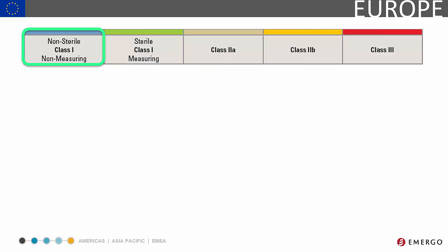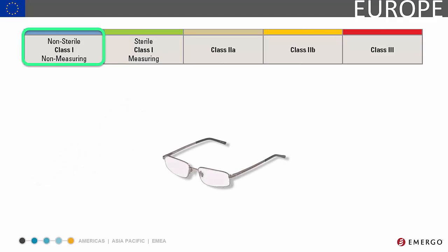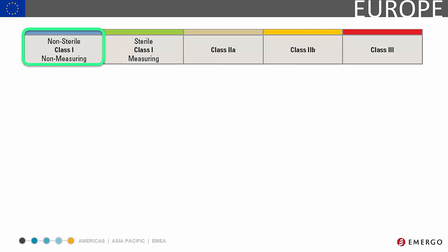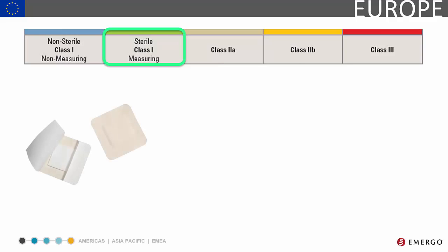Examples of Class 1 non-sterile, non-measuring devices include a scalpel, eyeglasses, and a stethoscope. Examples of Class 1 sterile measuring devices include island dressing, examination gloves, and a thermometer.